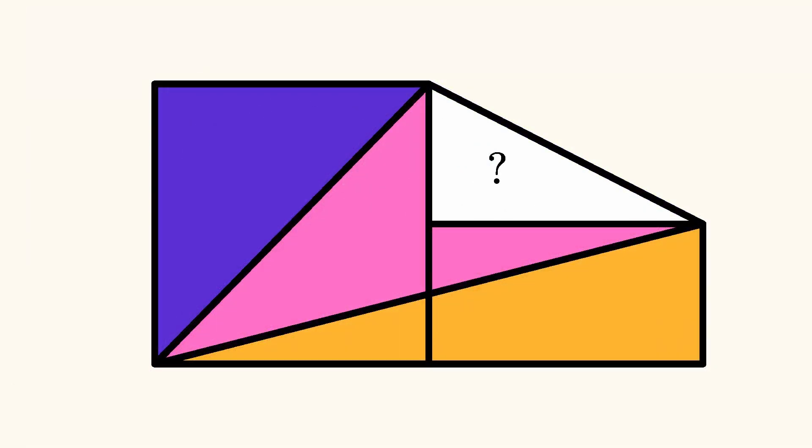We know that the area of the purple triangle is 12. The remaining half of the left rectangle is split between an orange section, whose area we'll call A, and a pink section, whose area is 12 minus A.